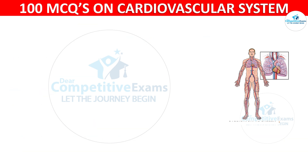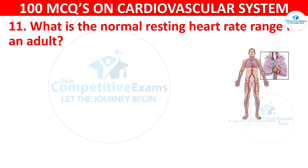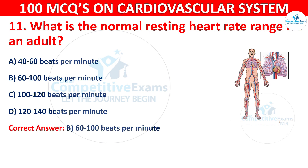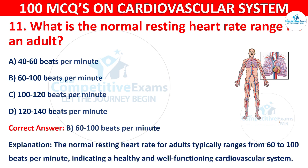Q11. What is the normal resting heart rate range for an adult? Options are: 40–60 beats per minute, 60–100 beats per minute, 100–120 beats per minute, or 120–140 beats per minute. The correct answer is B — 60–100 beats per minute. The normal resting heart rate for adults typically ranges from 60–100 beats per minute, indicating a healthy and well-functioning cardiovascular system.